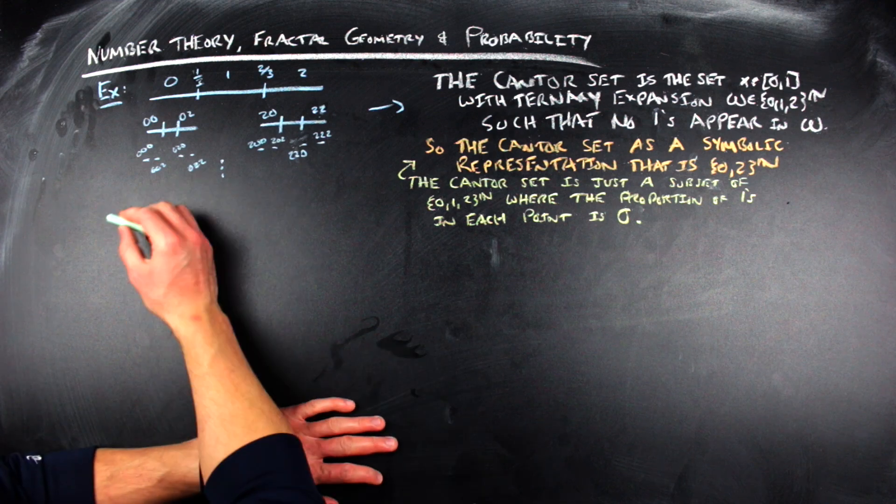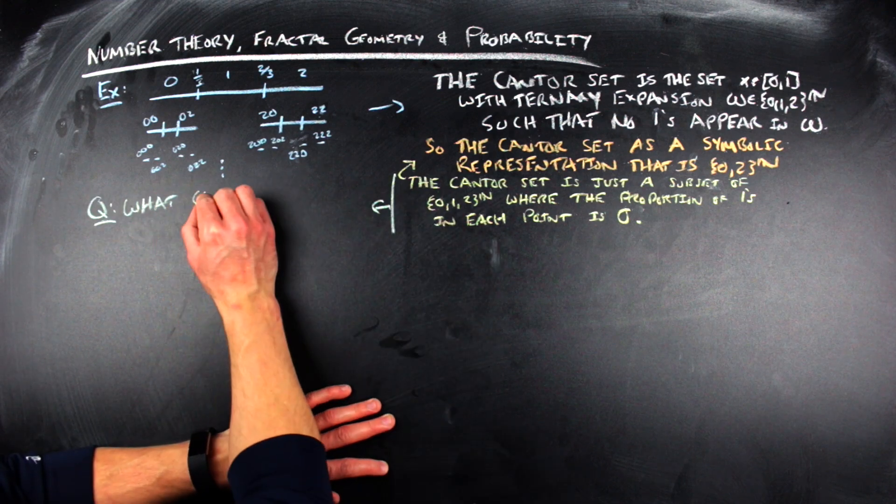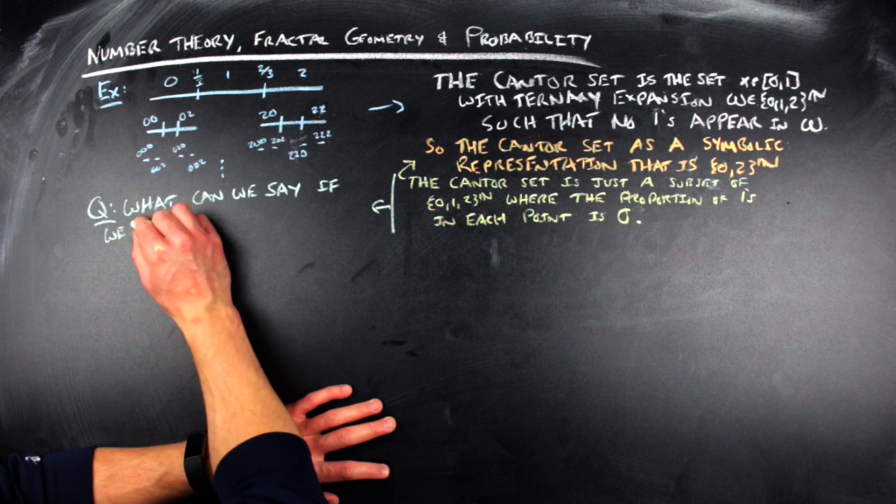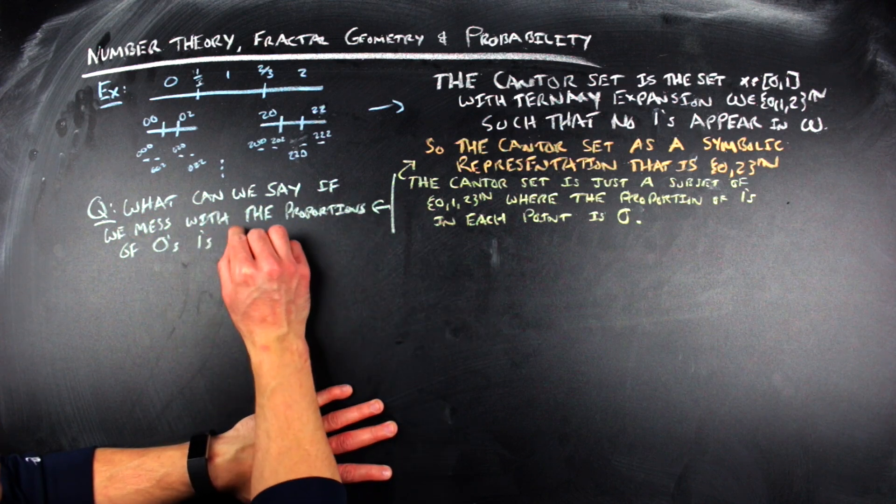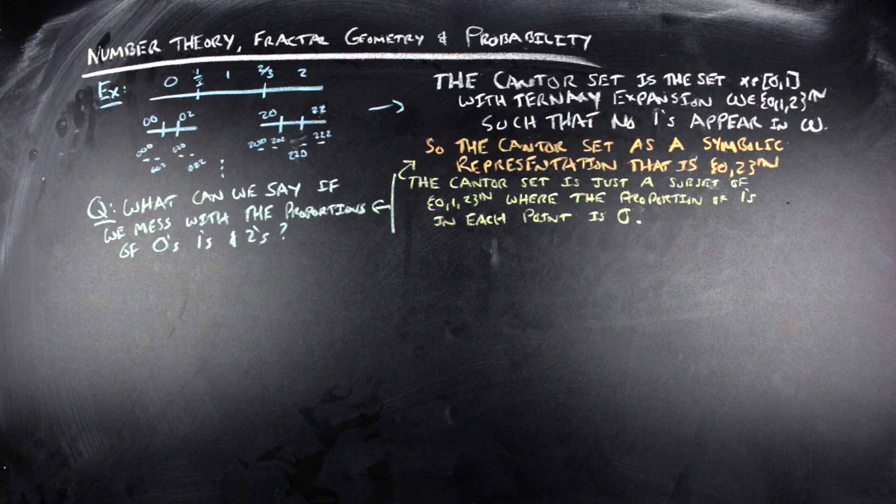So a question you could ask here is what happens if you mess with the proportions? What if you fix particular proportions of certain symbols in these expansions of numbers? So we're taking this number theoretic thing of identifying points with some symbolic representation. The symbolic representation has this fractal geometry flavor because you get these fractals usually when you do this generation. And then probability theory is going to come up here in a second with the proportion and also with some probability measure things.